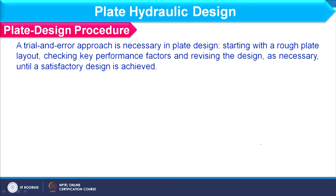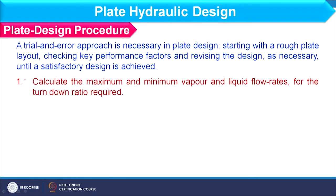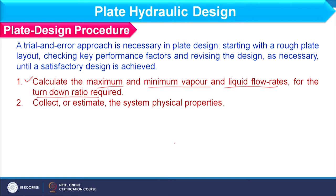Let us focus on the plate design procedure. We have different steps and these steps require a trial-and-error approach. The first step is to calculate maximum and minimum vapour and liquid flow rates for a given turn-down ratio. The turn-down ratio is the ratio of maximum to minimum vapour and liquid flow rates, and usually it has a value around 0.7, meaning 70 percent.